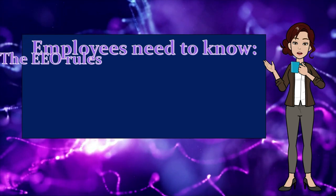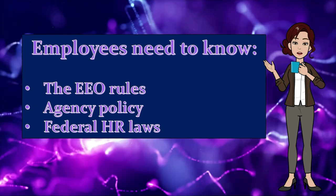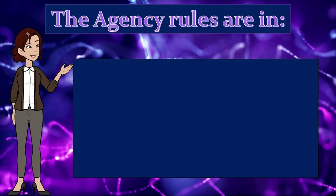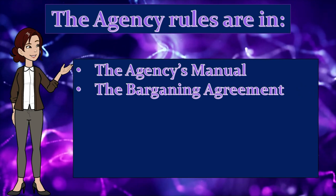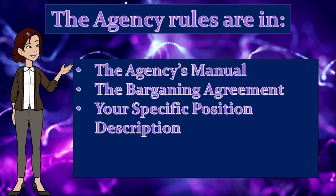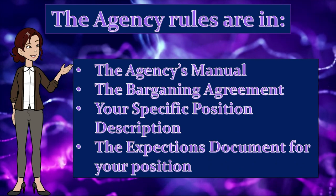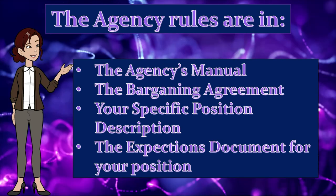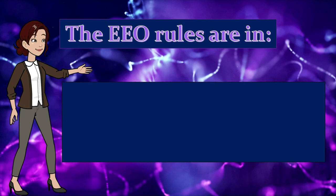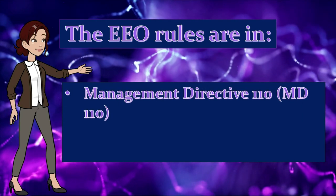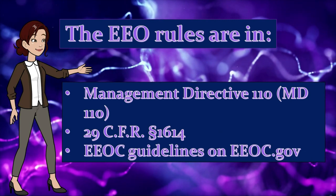Employees need to know the EEO rules, agency policies, and federal human resources laws. Agency rules can be found in your agency's manual, the union bargaining agreement if you have a union, your specific position description provided to OPM, and the annual expectation document given before your annual review. The EEO rules can be found in Management Directive 110 (MD 110), the Code of Federal Regulations at 29 CFR Section 1614, and in the EEOC Guidelines on the EEO website.